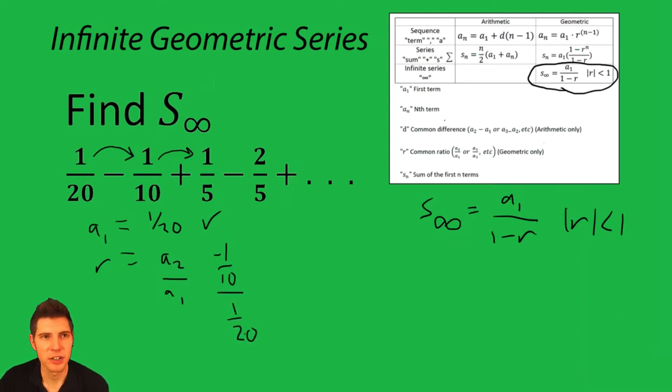When we divide fractions, we take the bottom one and flip it and then multiply. So it's going to be negative one tenth times twenty over one. Then we cancel things out, multiply across, and we get negative two over one. So r equals negative two. We're multiplying by negative two each time to get the next term.